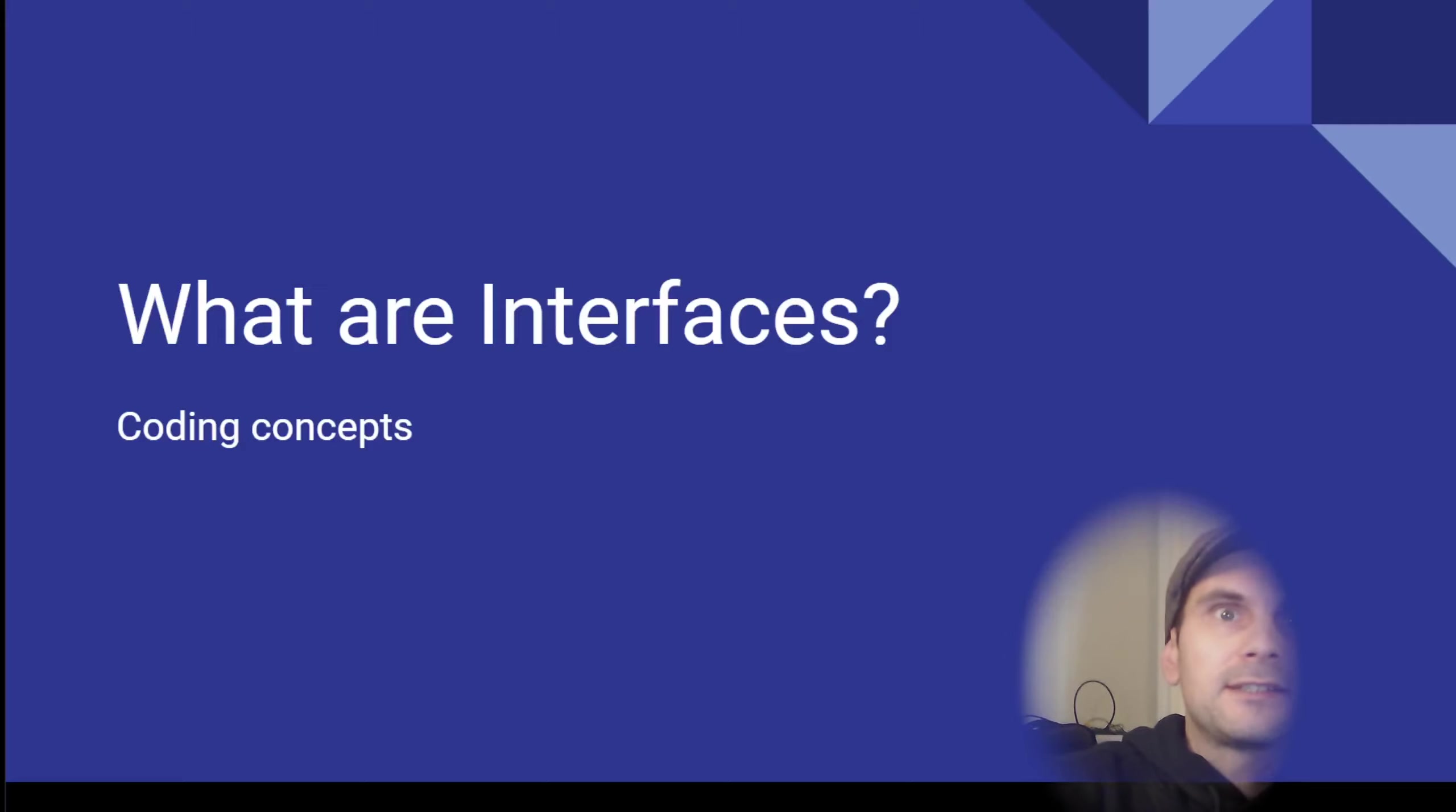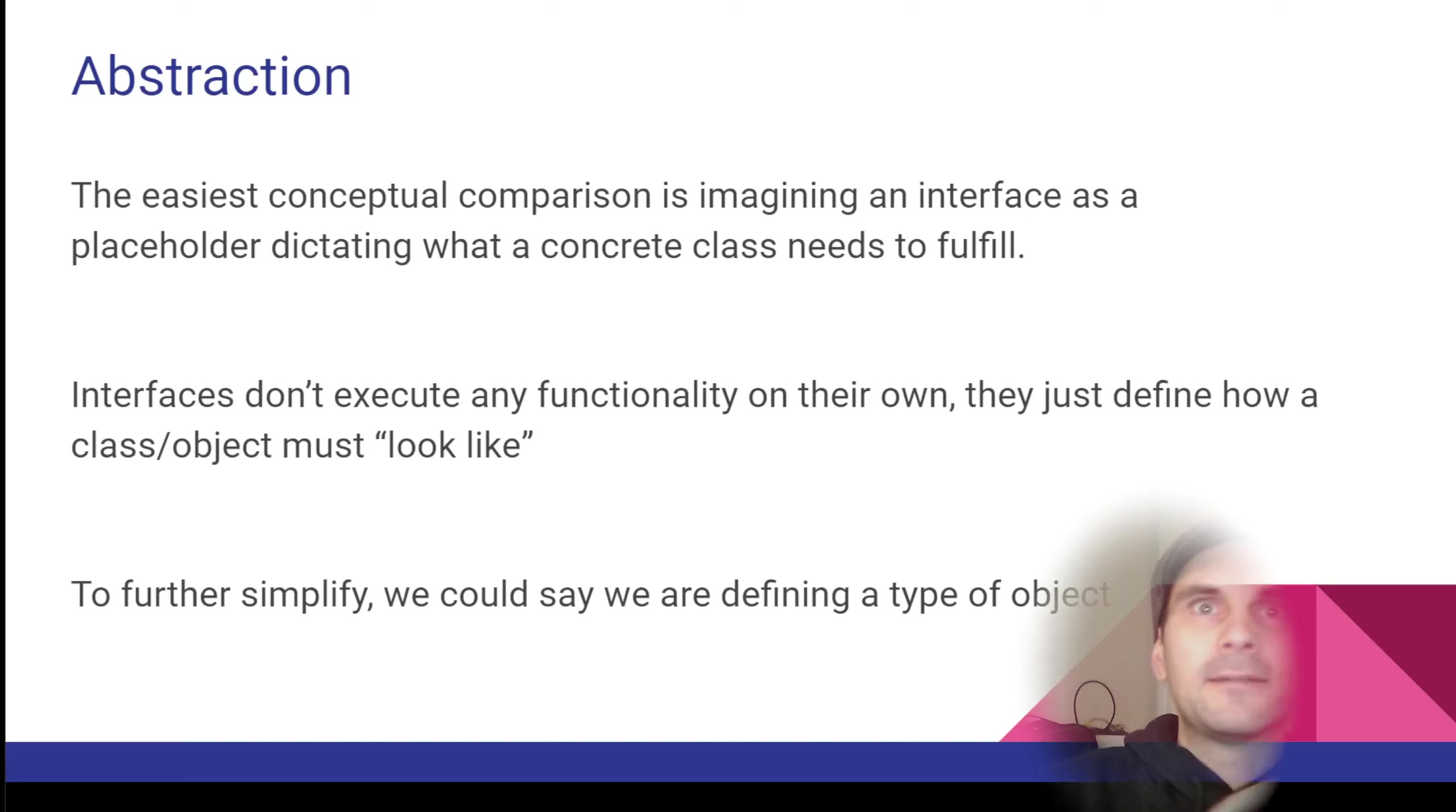So what exactly are interfaces? The easiest way to look at it is to maybe look at it like a placeholder, something that kind of dictates how something needs to behave, what it needs to be able to do without actually getting into the concrete functionality. So an interface, that's different than an abstract class, it does not contain any kind of functionality. It just defines how a class must look like.